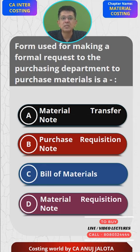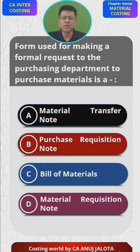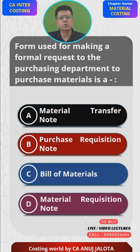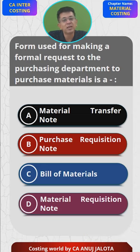Option C — Bill of Materials: whenever any job comes in, whatever material is required for that job, we prepare a list of it. That list is called the Bill of Materials.